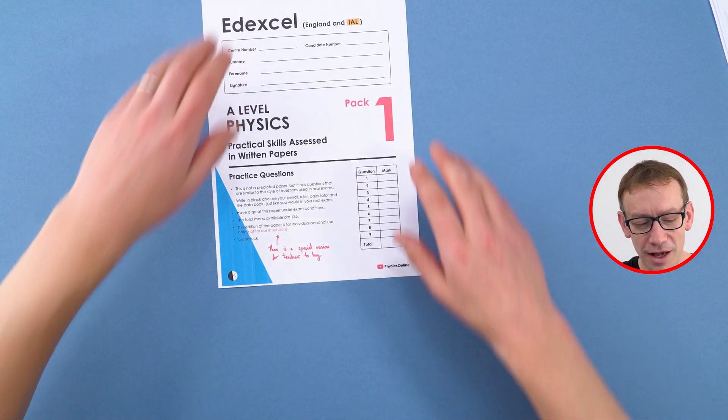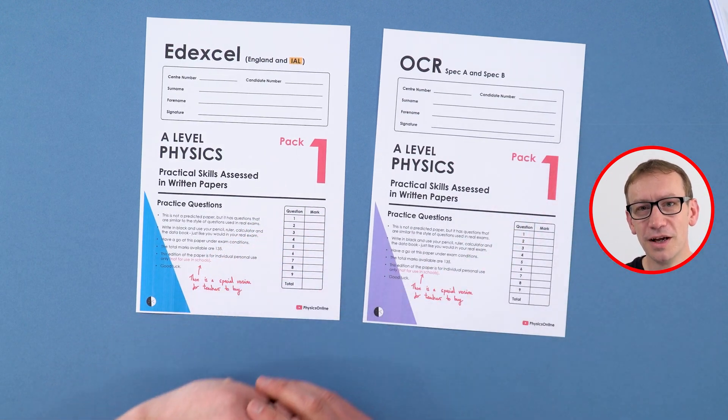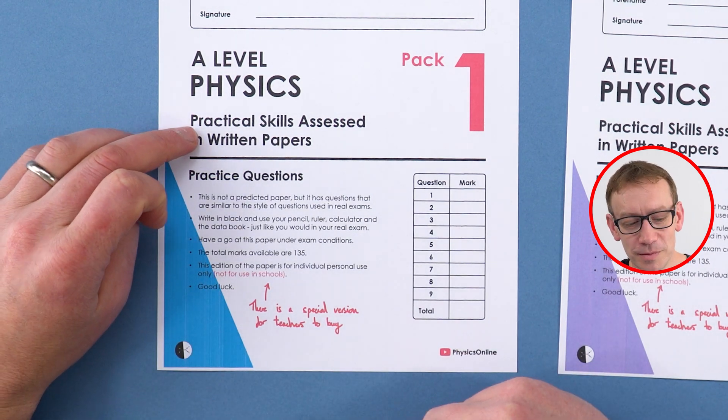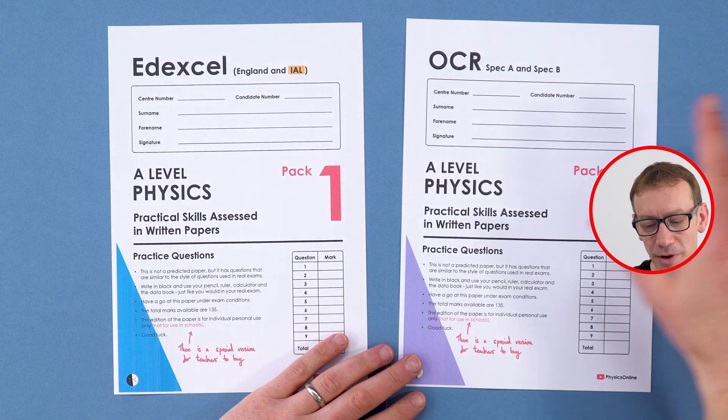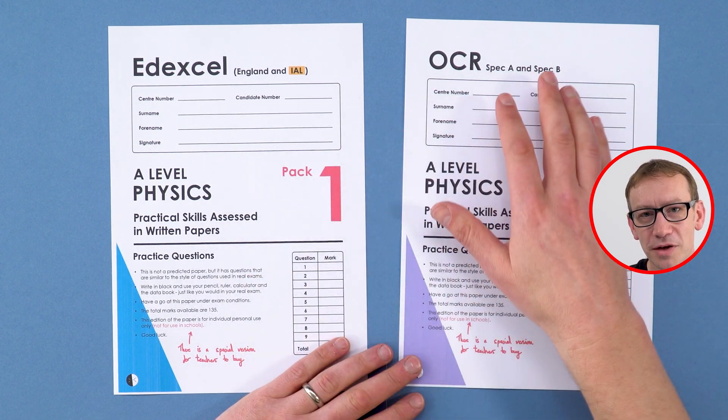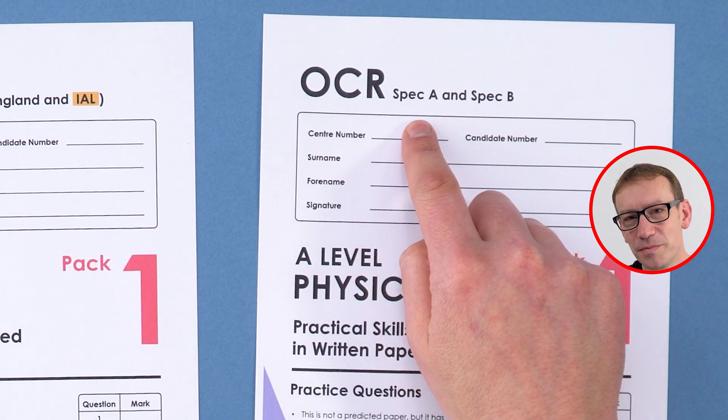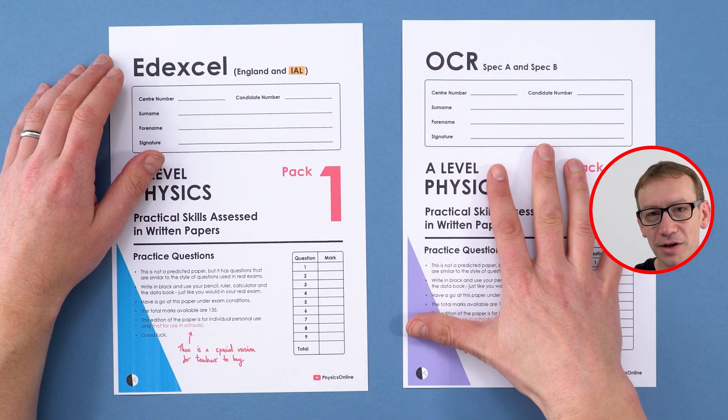I have a version here for Edexcel, I've got another version which is for OCR. I basically put those three exams together and made this mega pack, so it's like pack one of practical skills assessed in written papers. There's a bit of a foreword as well where I explain about how this could be assessed in each of your exams. The OCR one is suitable if you're doing the spec A, and the 10 kids or so who are actually doing spec B.